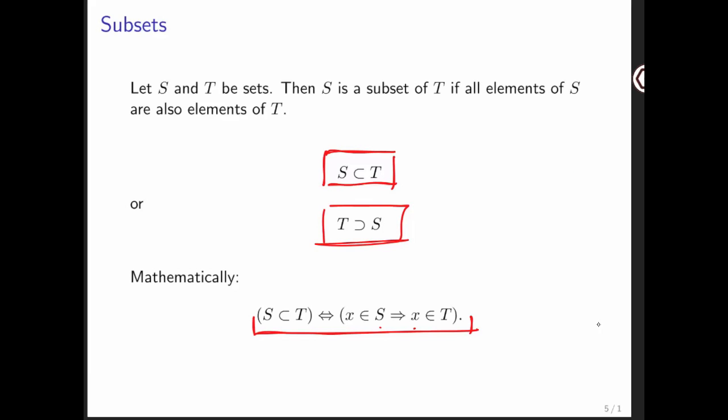And the way to visualize that is that here we have the set T, and then the set S is somehow inside it. Now it's allowed for all elements of T to also be in S.